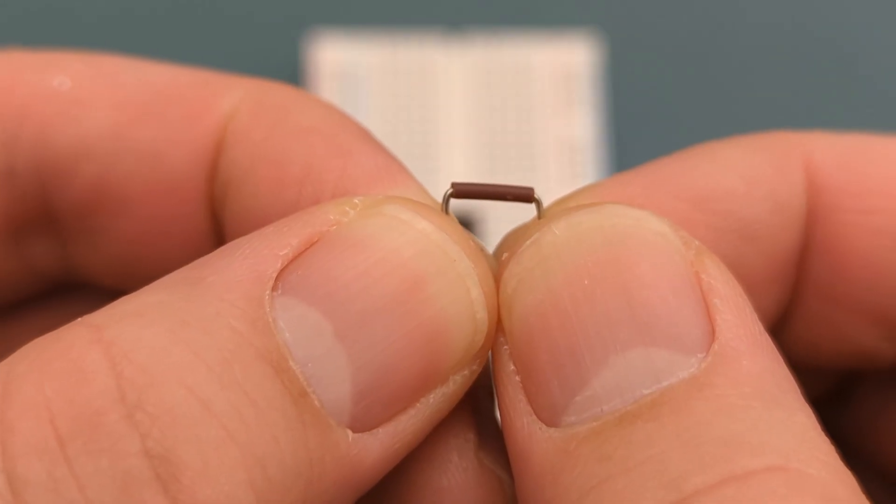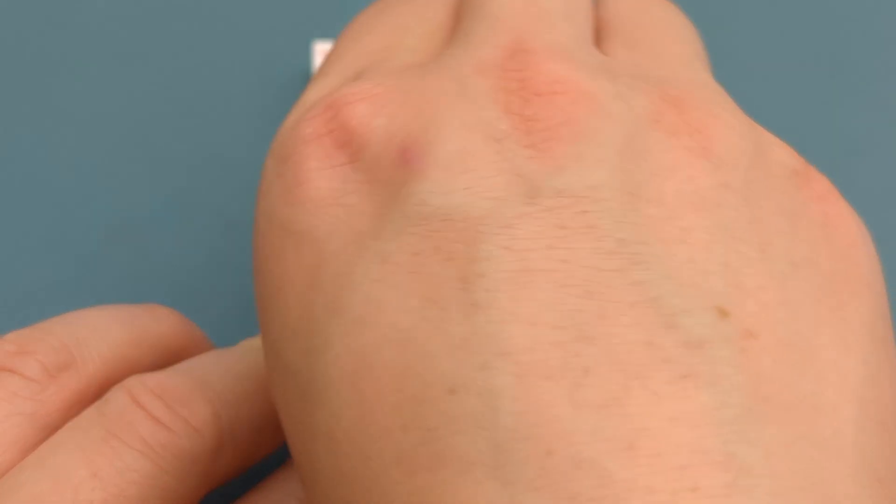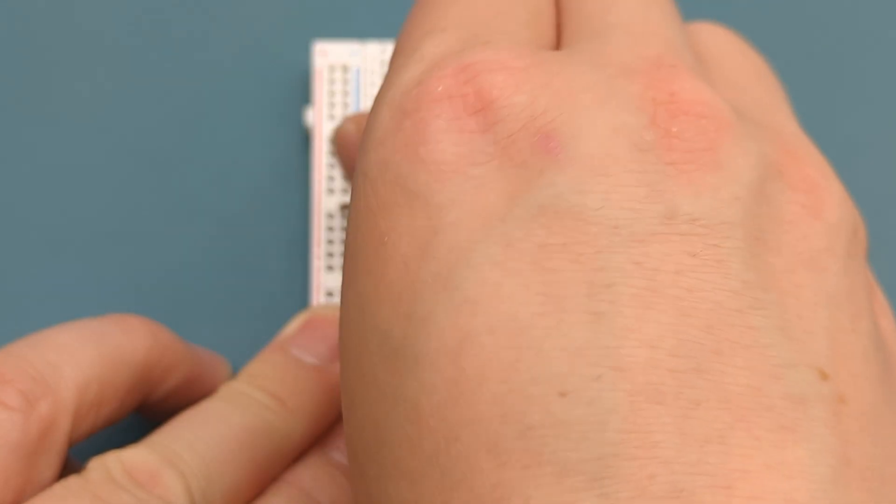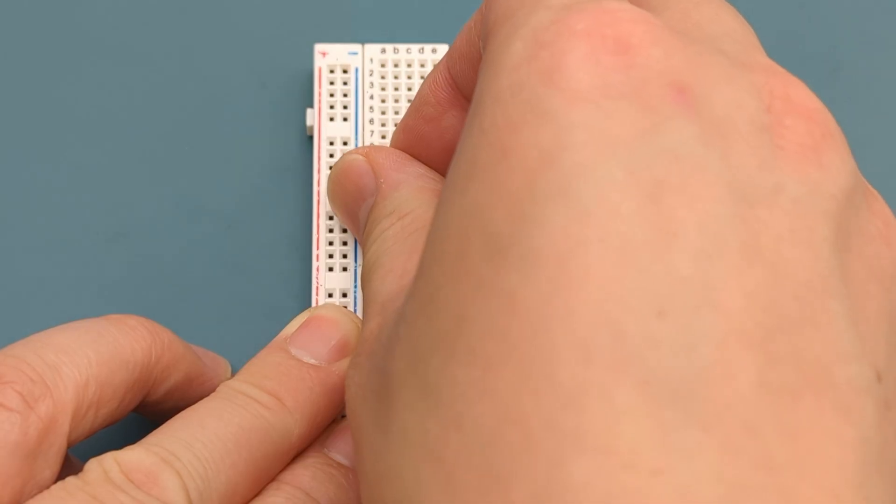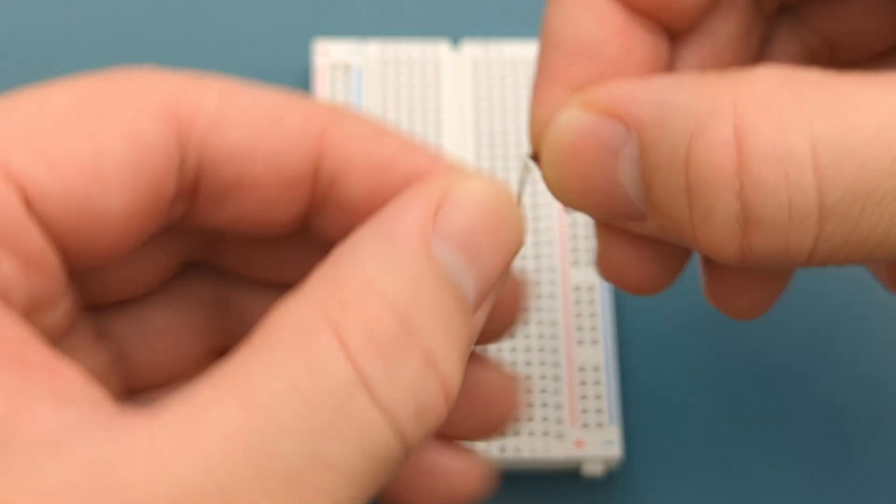A jumper wire connects pin 1 or ground to the negative rail. A jumper wire connects pin 8 or VCC to the positive rail.